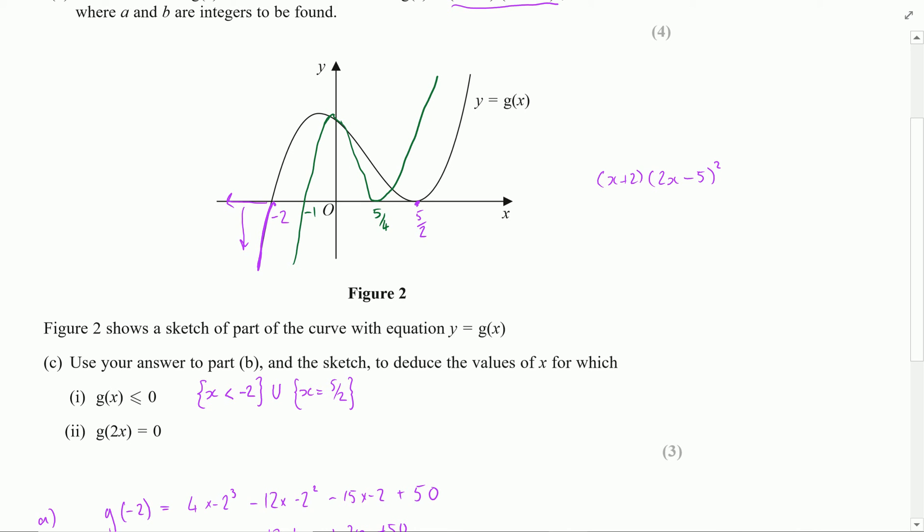And I could then just straight away quote that the two answers here were going to be that x is equal to negative 1 and x is equal to 5 over 4.